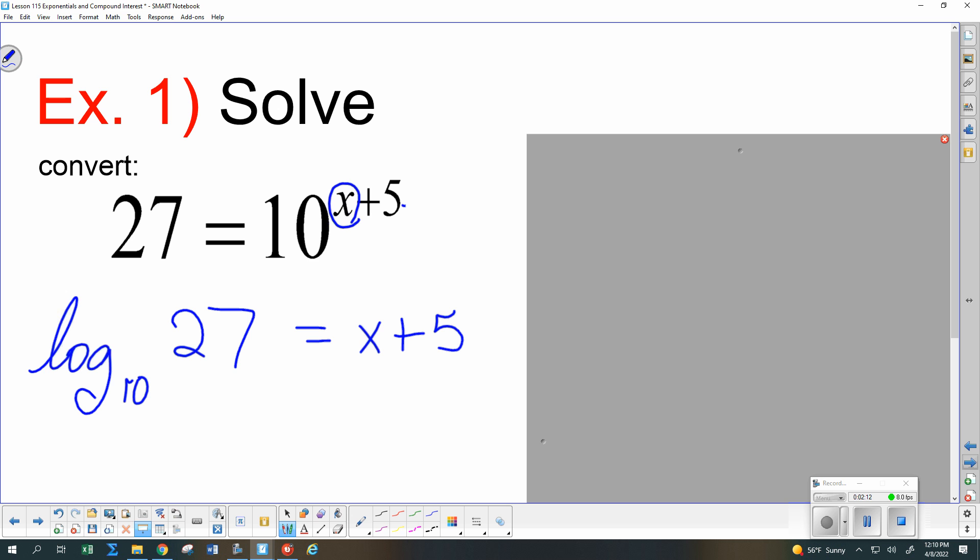So we're not ready to do this yet. Put the calculators down. If we put log base 10 of 27 in the calculator, the calculator would give us a number, right? So the left-hand side of that is just a number. So I have X plus 5 equals a number. If I want just X, what am I going to have to do? I need to subtract it from both sides. So I can do log base 10 of 27 and then subtract 5, and that will give me my X.